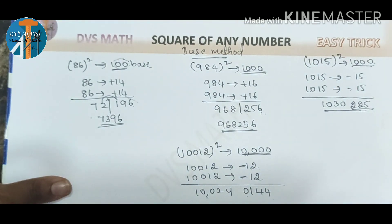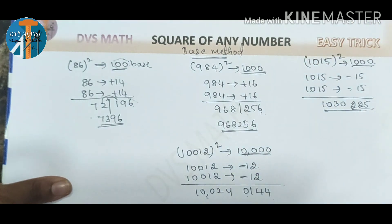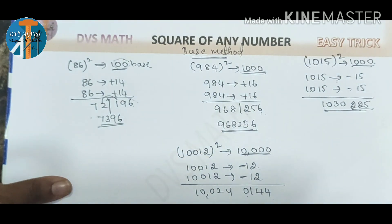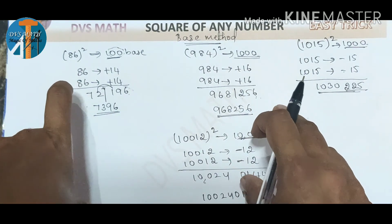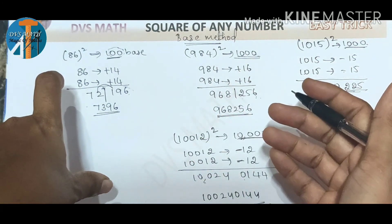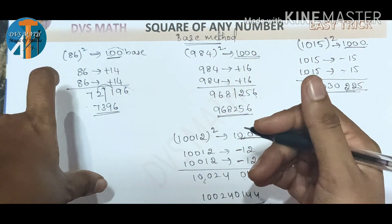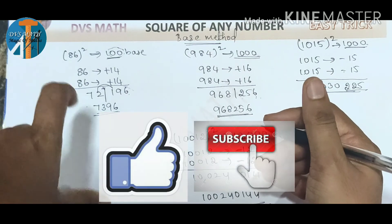Now we have done the base method — nearest 100,000, 10,000, or 1000. We have done the trick of squaring any number. Check our channel, subscribe, and support our channel. Thank you.